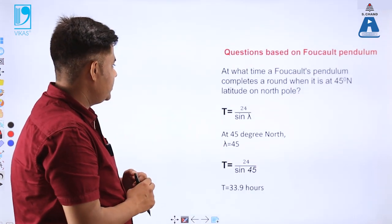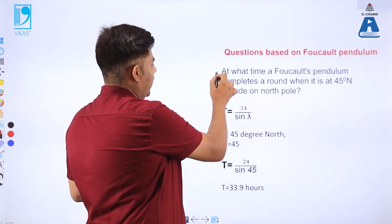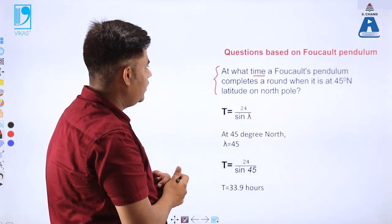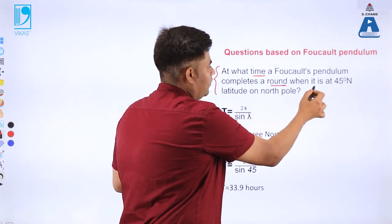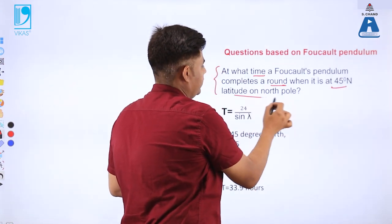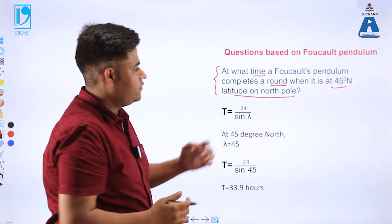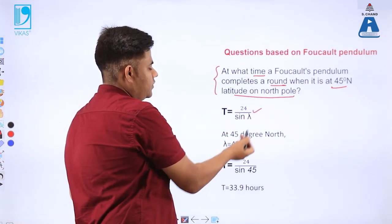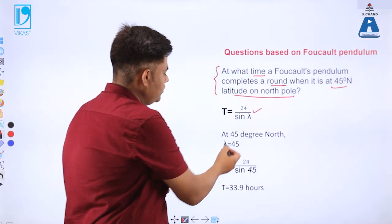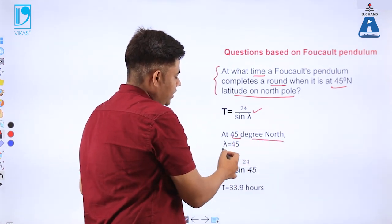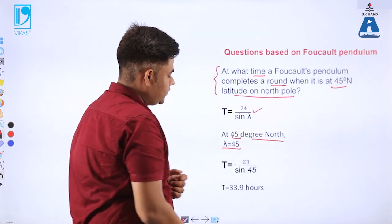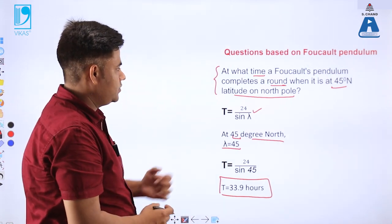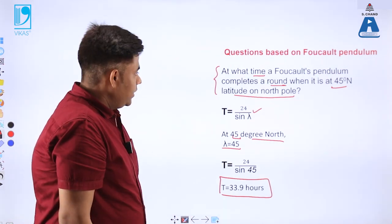The next question asks: what time is required for a Foucault's pendulum to complete one round when it is at 45 degrees north latitude? Using the formula T equals 24 over sin lambda and substituting lambda as 45 degrees, we get the time period as 33.9 hours.